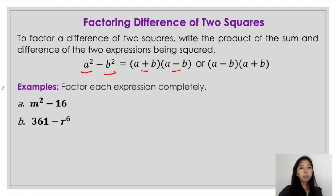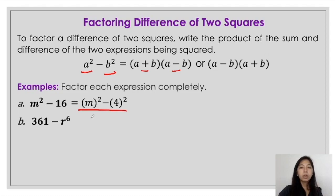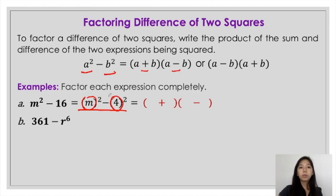First example: m squared minus 16. m squared can be expressed as m raised to 2, and 16 can be expressed as 4 raised to 2. This is just another representation of m squared minus 16. To get the factors, take the square roots — m and 4 — and write the product of the sum and difference. Therefore, the factors of m squared minus 16 are the quantity of m plus 4 times the quantity of m minus 4.